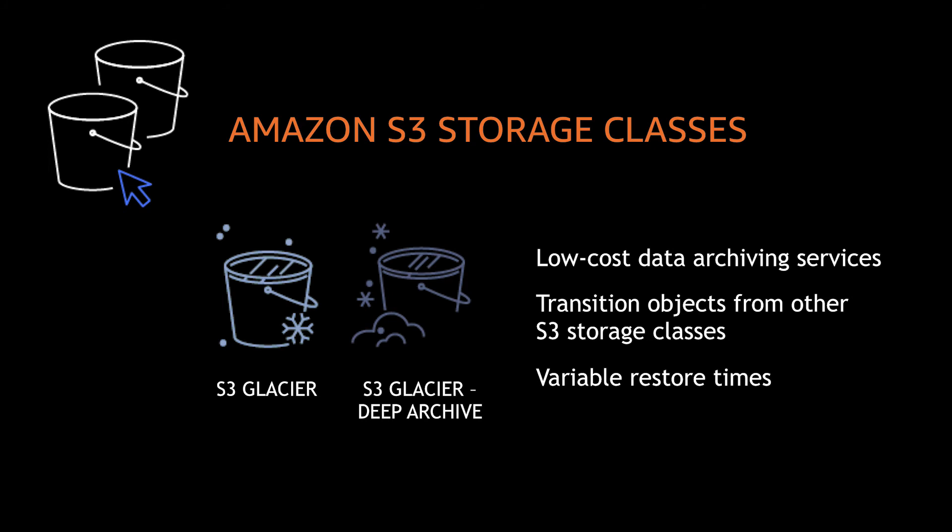You can also replace your on-premises tape libraries and archive your coldest, least active data to S3 Glacier Deep Archive, AWS's lowest-cost storage class, where you retain a terabyte of data for around one dollar a month.